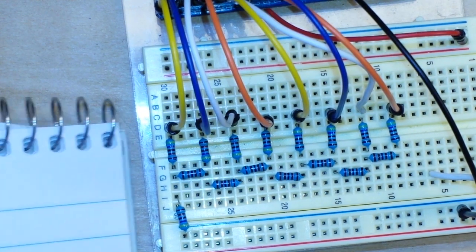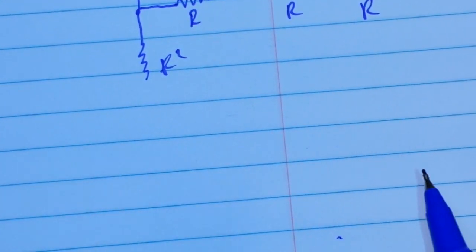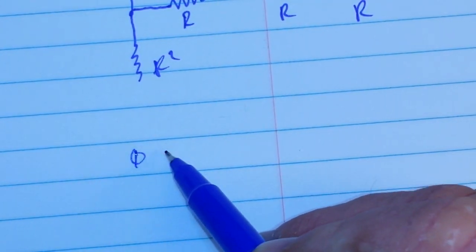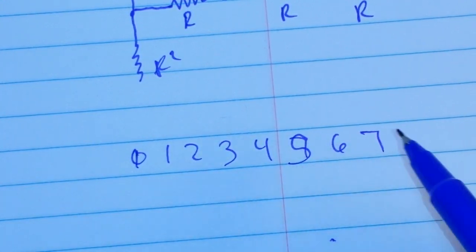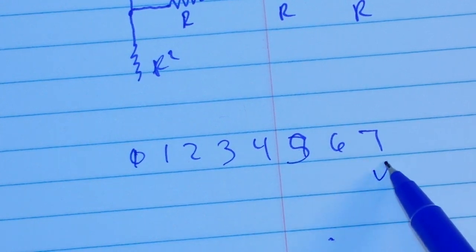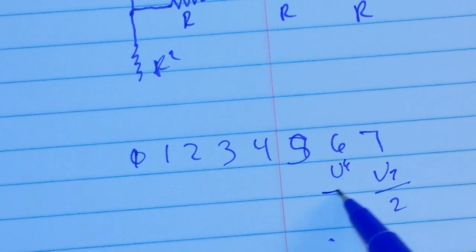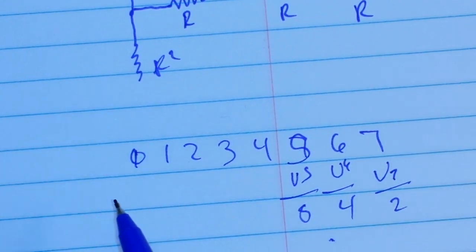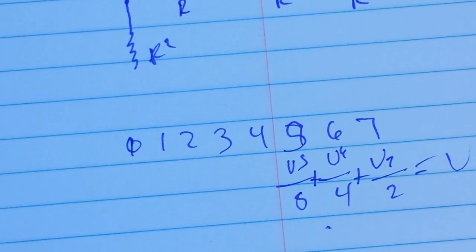Now, if you want to get into all the math of this — it basically goes like this. We have our 8 inputs. This one, the voltage is equal to V7 divided by 2. This one is equal to V6 divided by 4. V5 divided by 8. And so on and so on — and you add these up and you get your total voltage out.